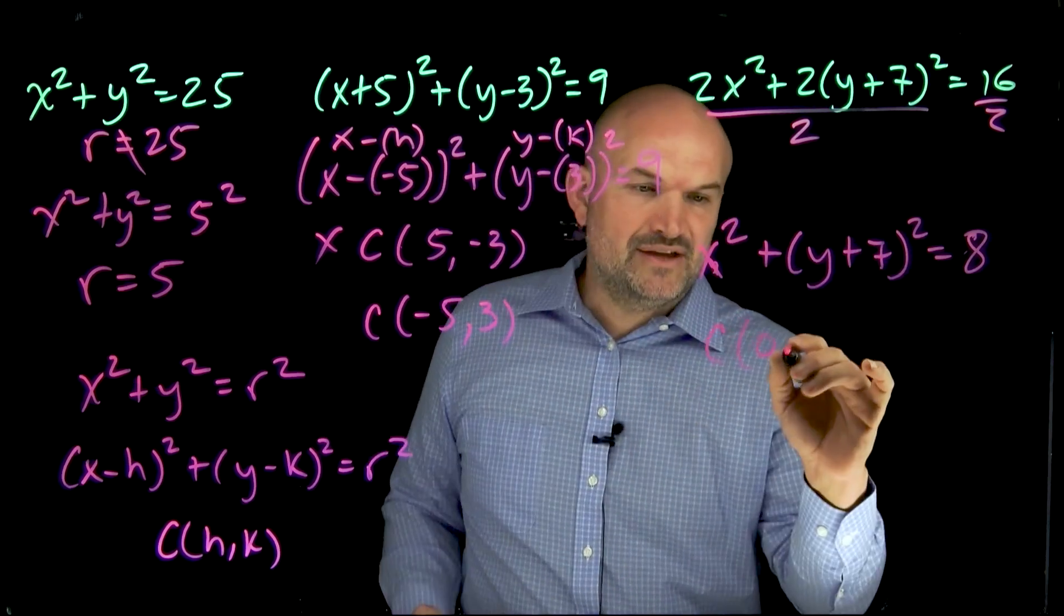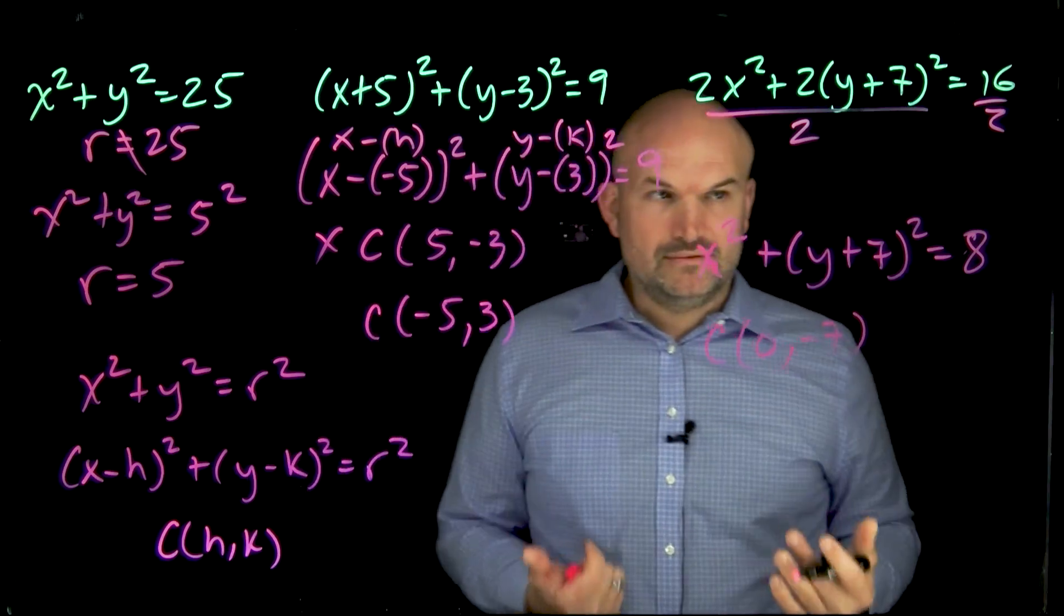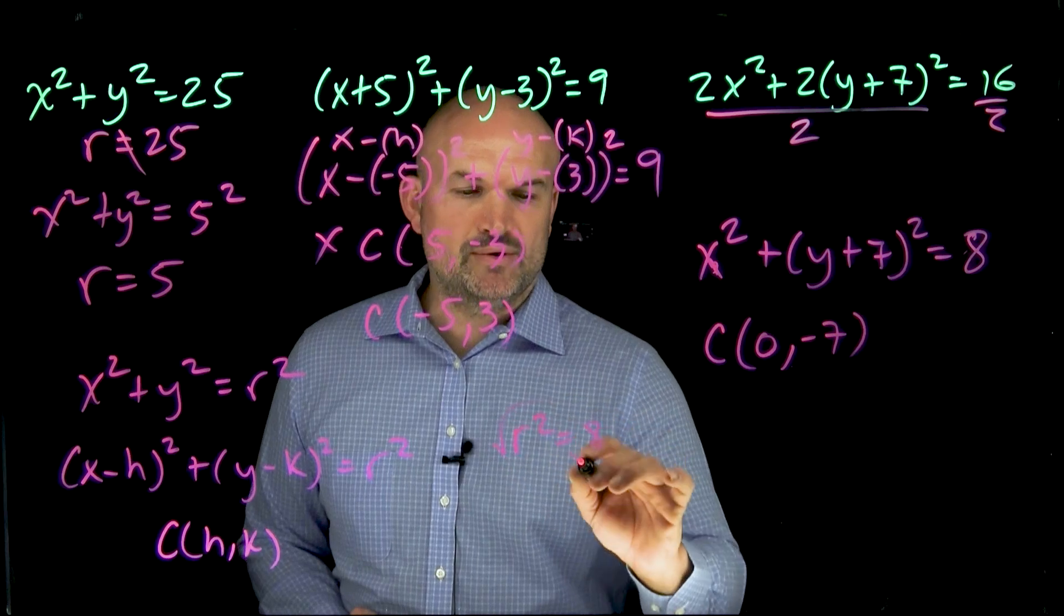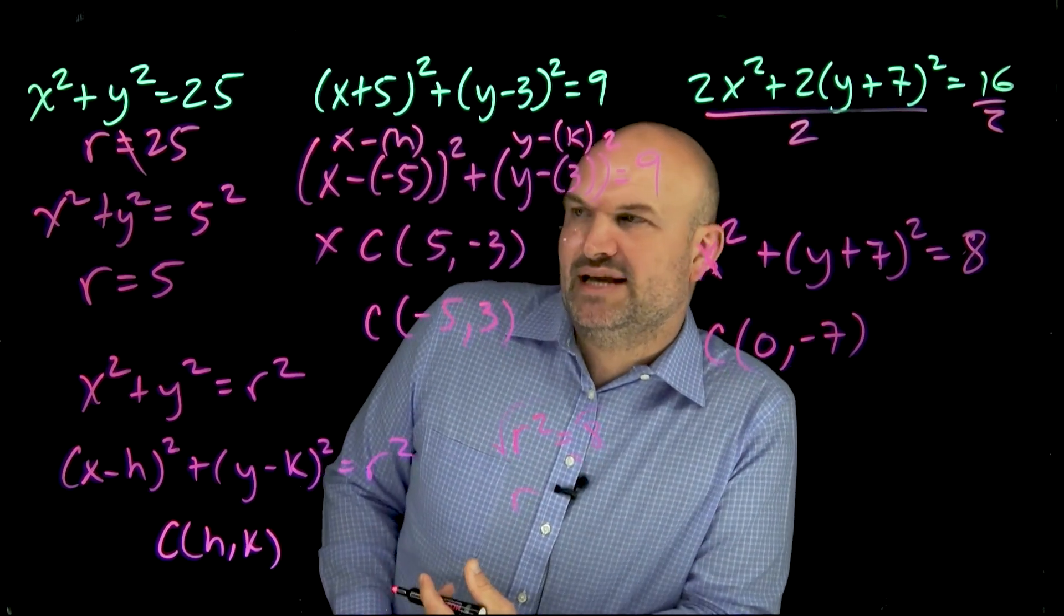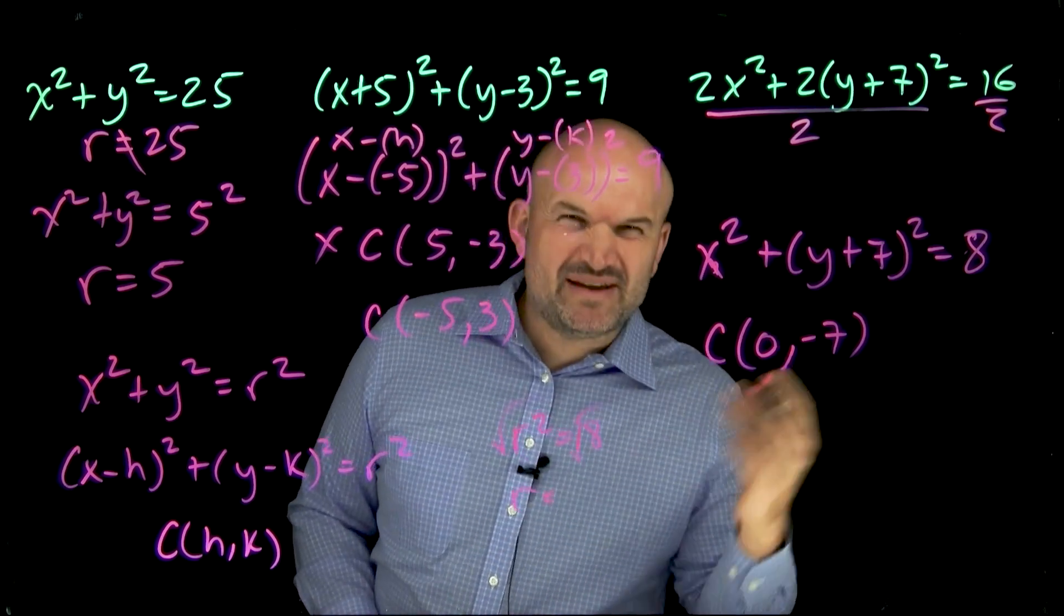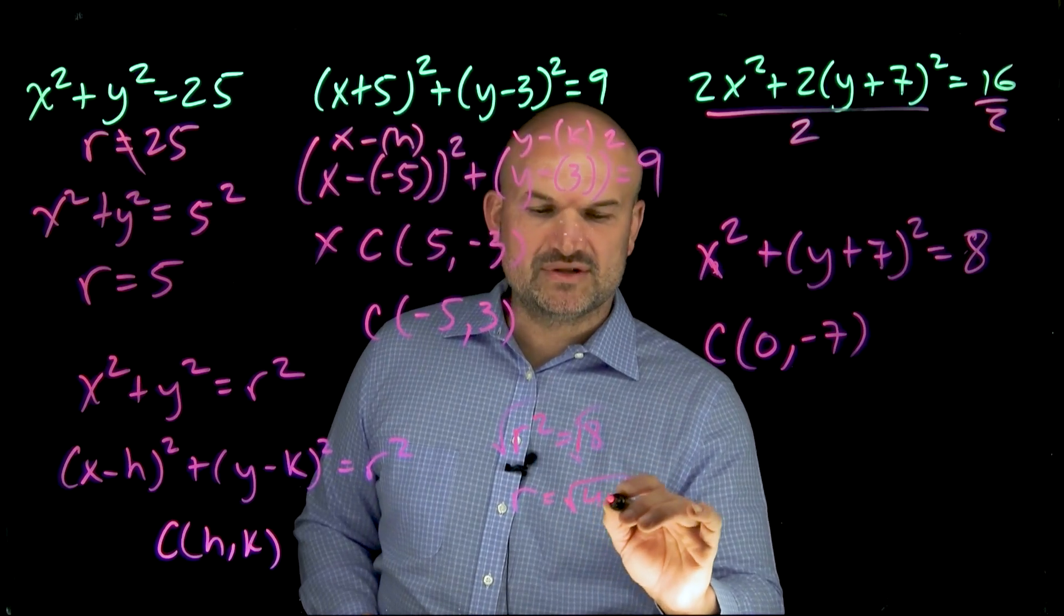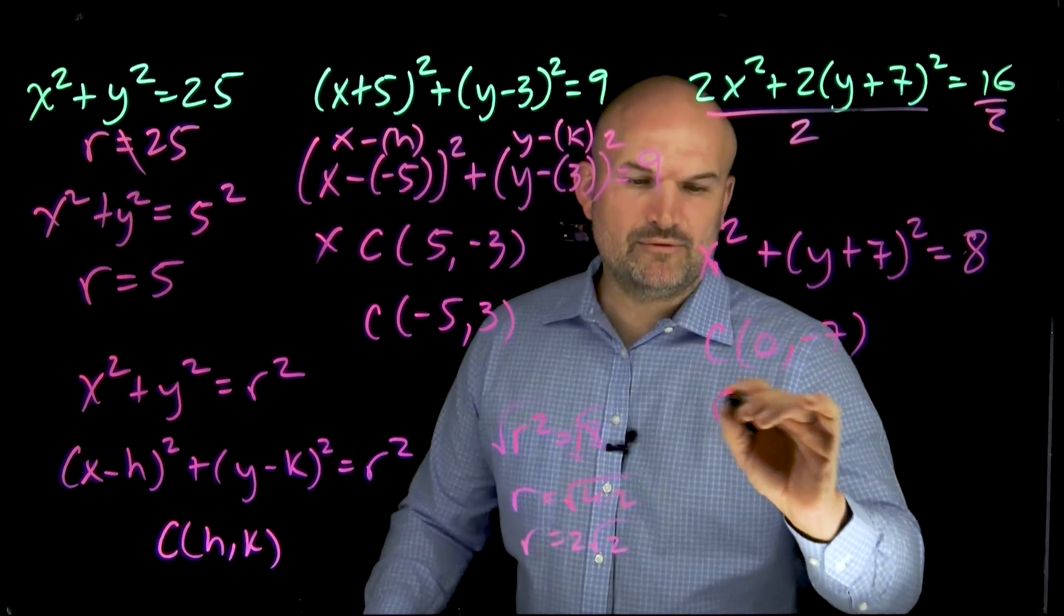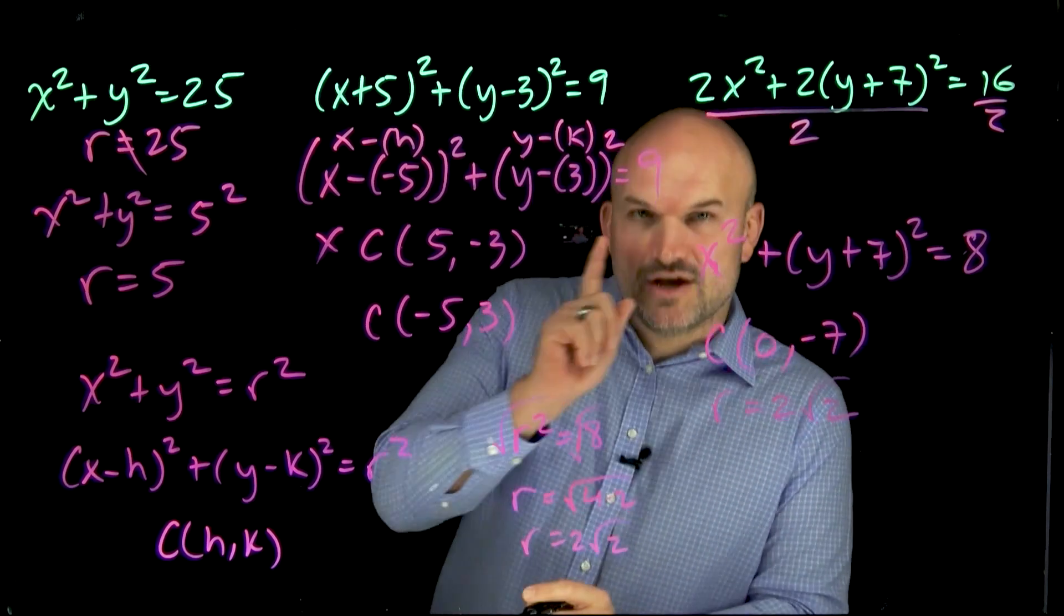And then here, remember, it's the opposite value. So therefore, it's going to be a negative 7. And now the radius, we just need to say, well, what number squared equals 8? So we could say r squared is equal to an 8. Take the square root of both sides. Now, we don't want to use a decimal equivalent like 2.8284271. What we want to do is simplify this radical. You could leave it a square root of 8. But typically, we like things simplified. So I can rewrite that as a 4 times 2. Take the square root of 4, which is going to be a 2, square root of 2. So therefore, my radius in this case is going to be 2, square root of 2. Those are three mistakes. You don't make them.